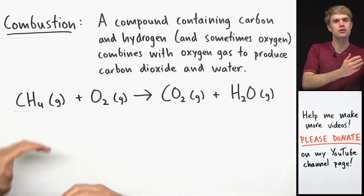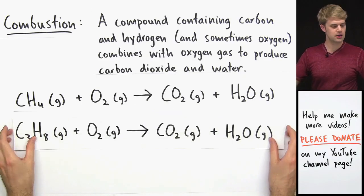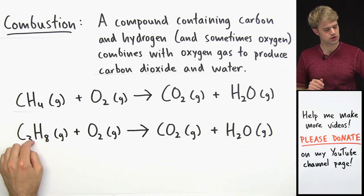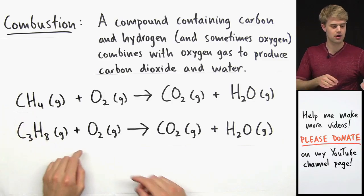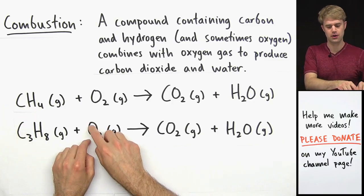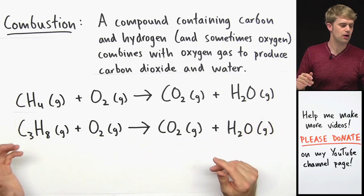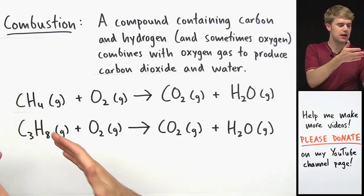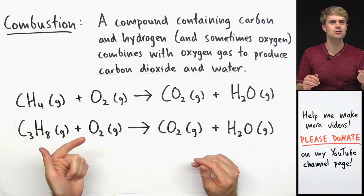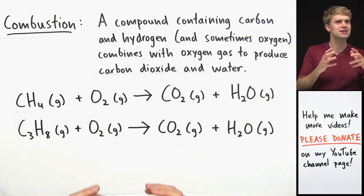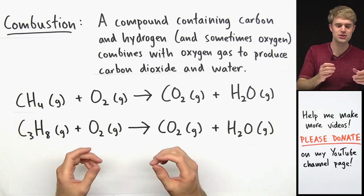We can start with different things in a combustion reaction, and as it says here, the compound usually contains carbon and hydrogen. Here is another example of a combustion reaction. This one starts with C3H8, which is the chemical formula for propane, another type of natural gas. Just like with methane, we combine C3H8 with O2, and this gives us carbon dioxide and water. It turns out that a lot of things that we burn — like natural gas, diesel, gasoline — are really similar, and they only really differ in the number of carbons and hydrogens in the molecules that make them up.